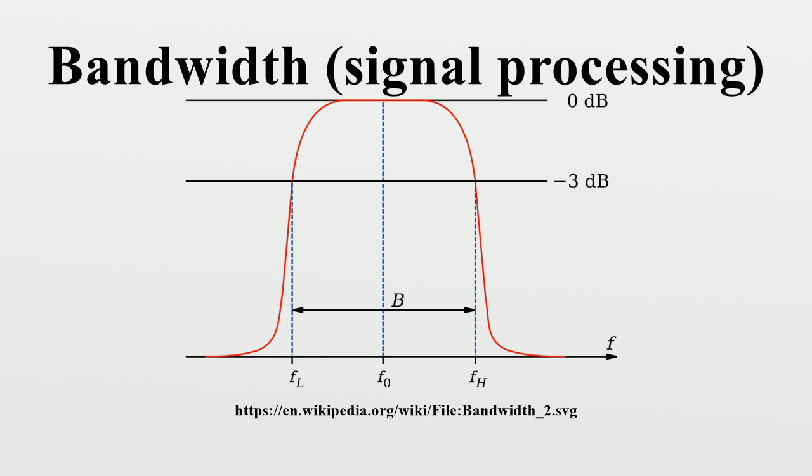As with any definition of the width of a function, many definitions are suitable for different purposes. Bandwidth typically refers to baseband bandwidth in the context of, for example, the sampling theorem and Nyquist sampling rate, while it refers to passband bandwidth in the context of Nyquist symbol rate or Shannon-Hartley channel capacity for communication systems.